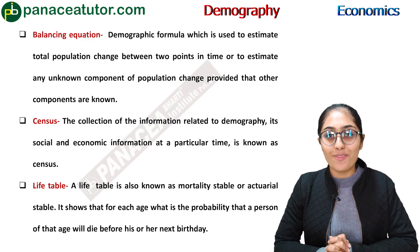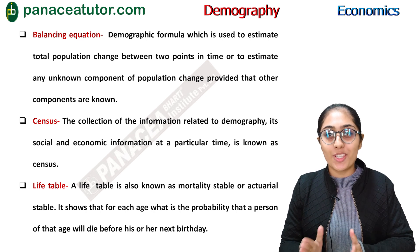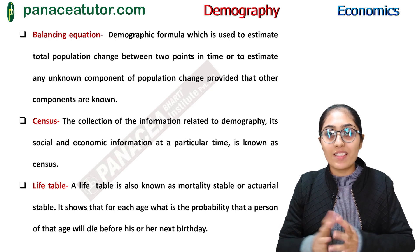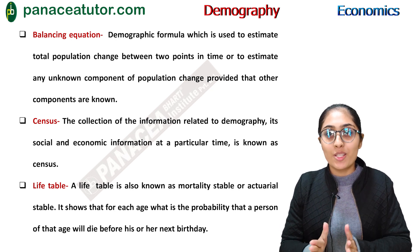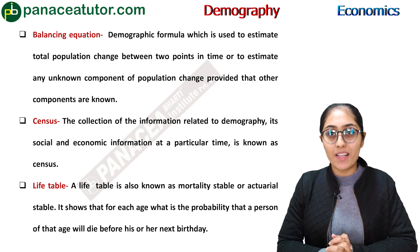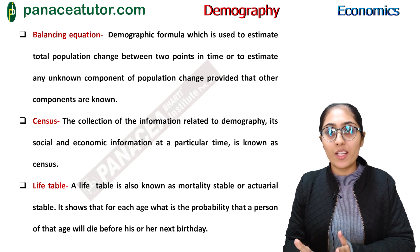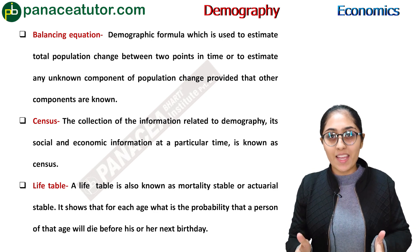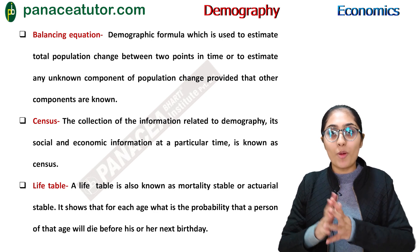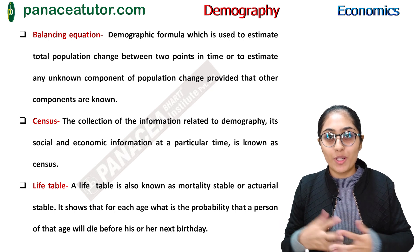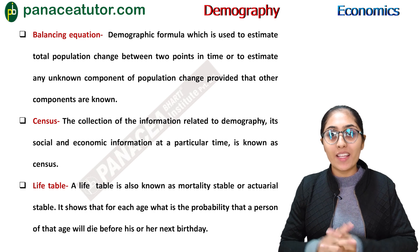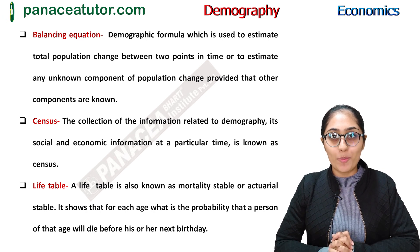Now we will study the meaning of balancing equation. Balancing equation means we study the change in total population. For example, to calculate the balancing equation for the year 2020, we take the base year 2010 — the difference in total population change over those 10 years will be known as the balancing equation. Balancing equation is used to estimate the unknown component of any population change.